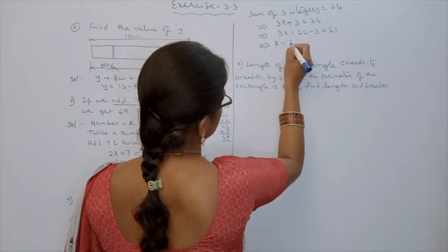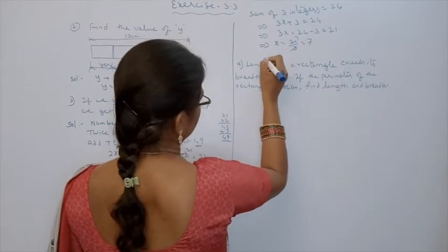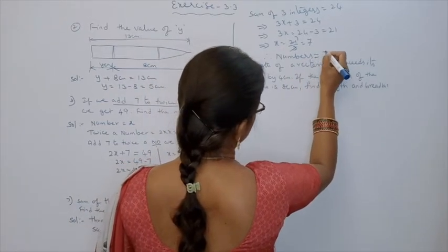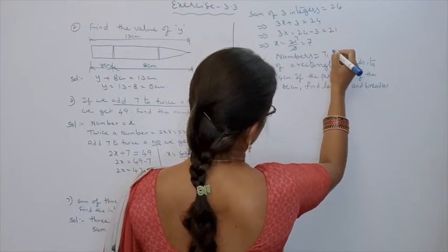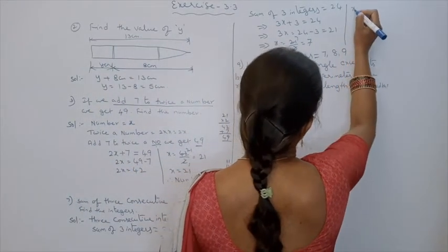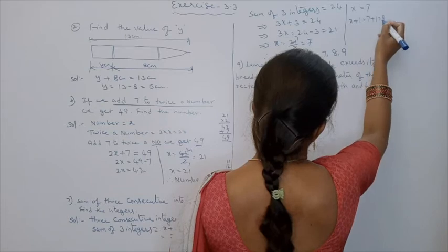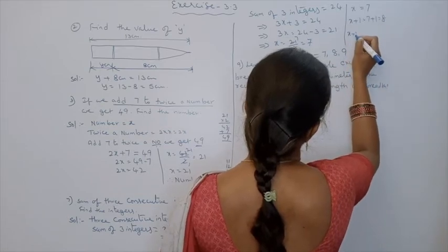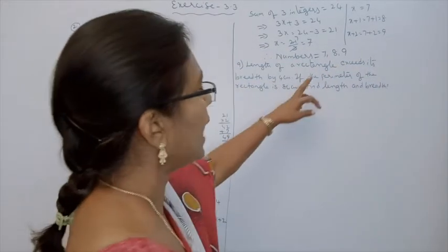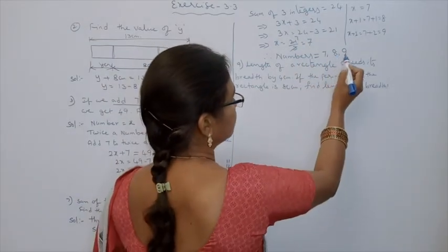Then x is equal to 21 by 3, which is 7. Therefore, the numbers are 7, 8, 9. x equals 7; x plus 1 is 7 plus 1 equals 8; x plus 2 is 7 plus 2 equals 9. So numbers are 7, 8, 9. If you add them: 7 plus 8 plus 9 — 7 plus 8 is 15, 15 plus 9 is 24. Correct!